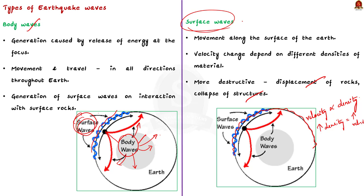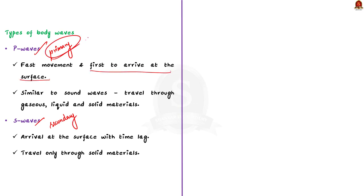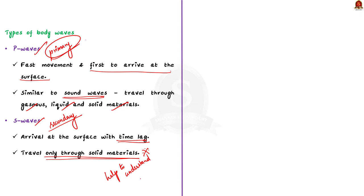Body waves are further classified into two types: P waves (primary waves) and S waves (secondary waves). P waves move faster and are the first to arrive at the surface, which is why they are called primary waves. They are similar to sound waves and can travel through gaseous, liquid, and solid materials. S waves arrive at the surface with some time lag and are called secondary waves. An important fact about S waves is that they can travel only through solid materials, which helped scientists understand the structure of the interior of the earth.